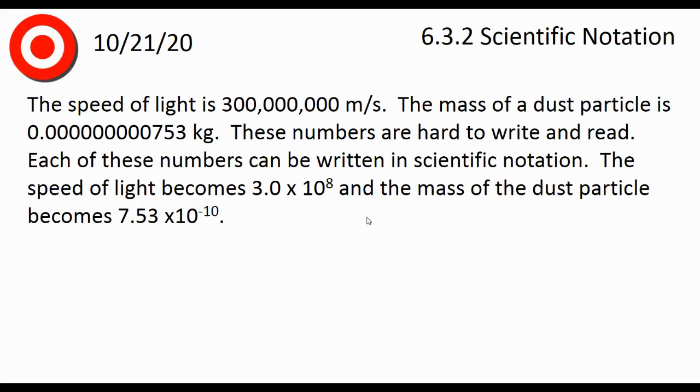Because a lot of times really big numbers and really small numbers have a lot of zeros at the end of them or at the beginning after the decimal. And these numbers can become hard to write, especially if you're a scientist, for example, and you're writing them over and over and over again.